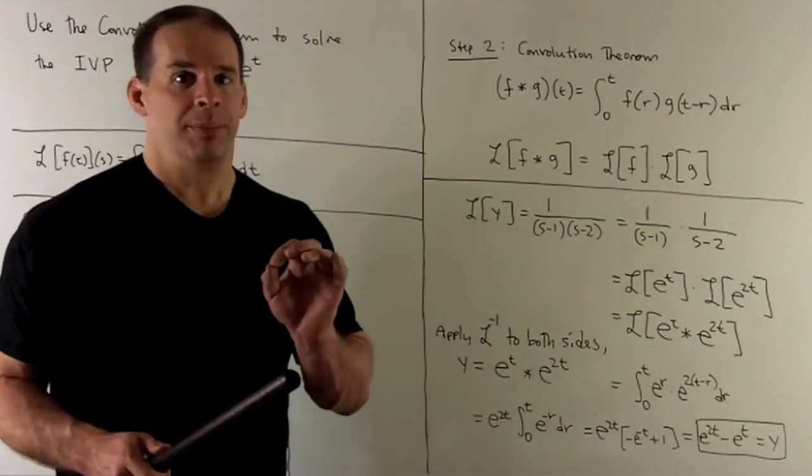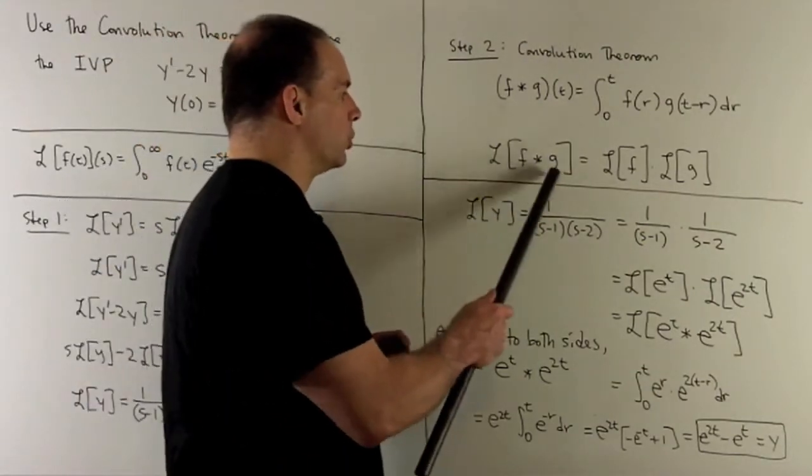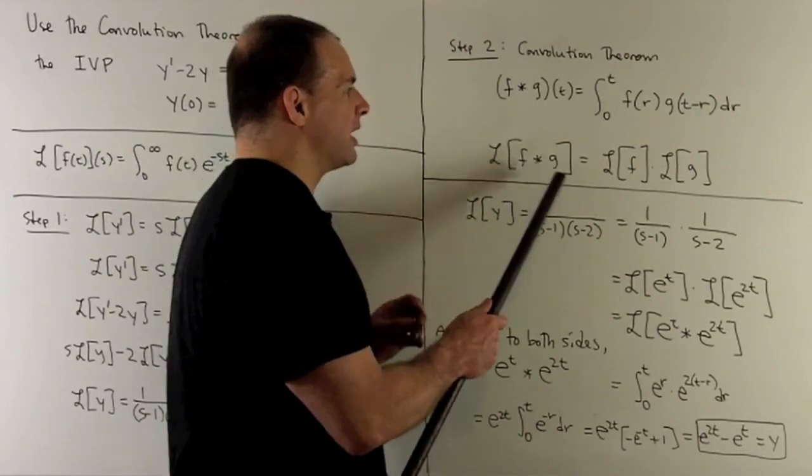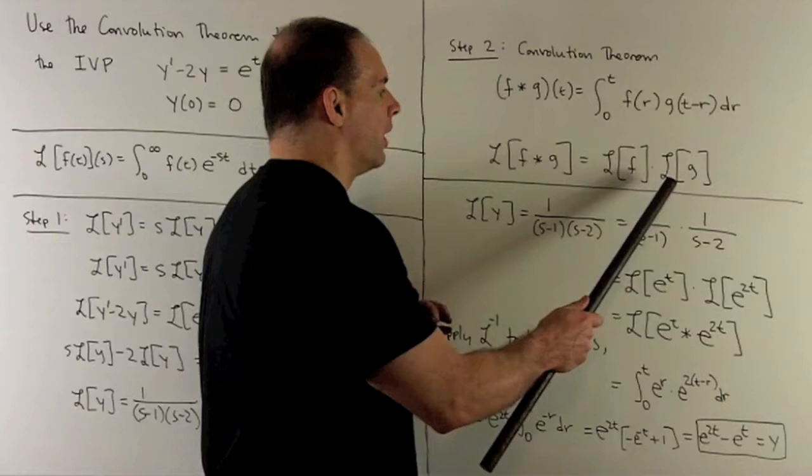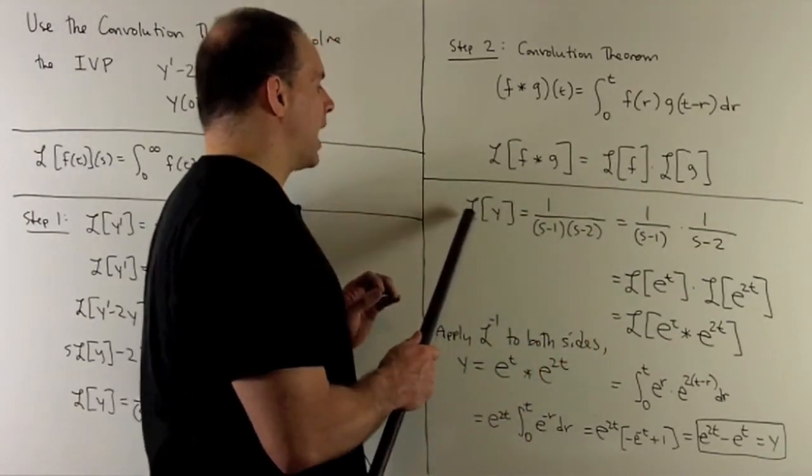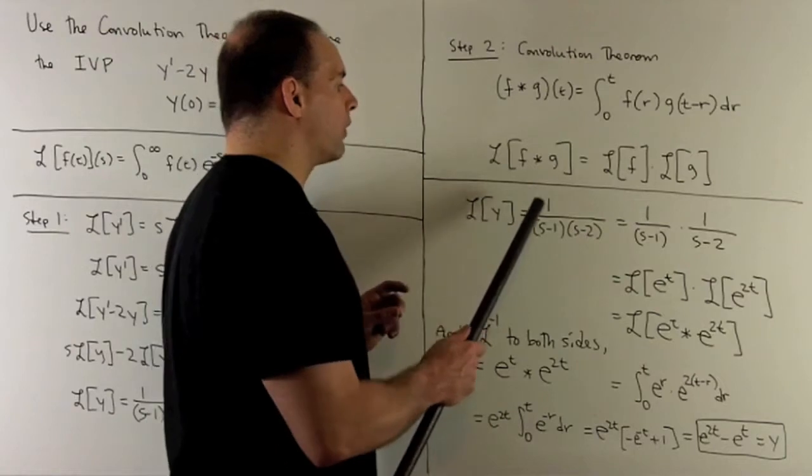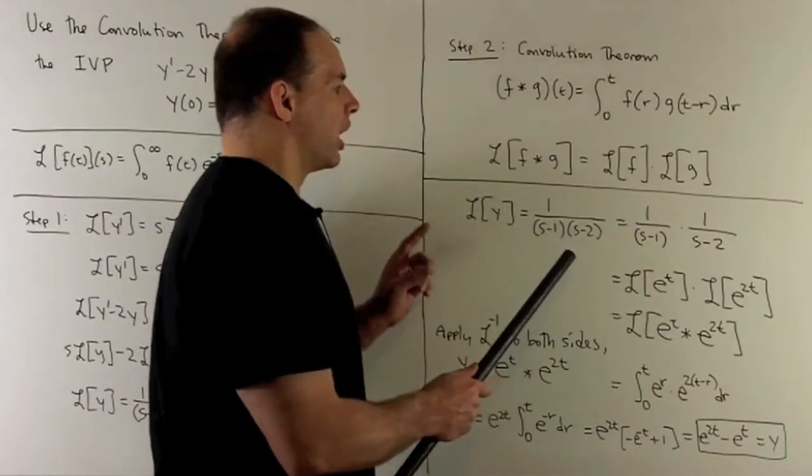Now, with that definition, if we take the Laplace transform of a convolution, it's going to be the same as taking the product of the Laplace transforms. How does that help us? Well, if you note, take the Laplace transform of our y, we get 1 over s minus 2, s minus 1. If we split this up as a product, I can identify each term as Laplace transform of an exponential.